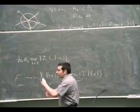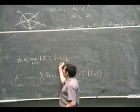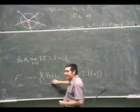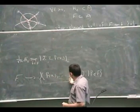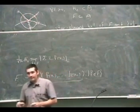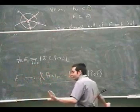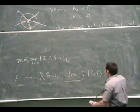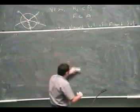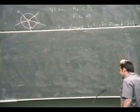Remember the bound on the covering numbers said that the Rademacher averages of a projected class — you fix a sample and project onto that sample — are bounded by the integral of the log of the L2 entropy. That bound was: 1 over square root of n, the expectation of the supremum of f in F of the sum of epsilon i times f(x_i), is bounded by the square root of the log covering numbers integrated up to epsilon.